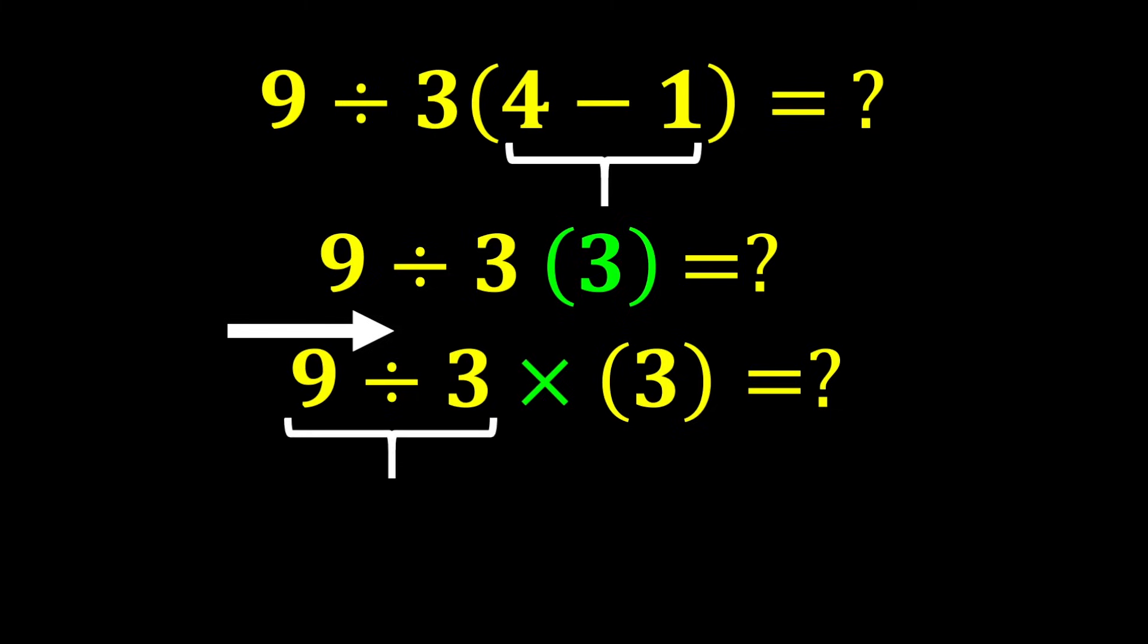9 divided by 3 gives us 3, and in the end, 3 multiplied by 3 gives us 9, which is our final answer.